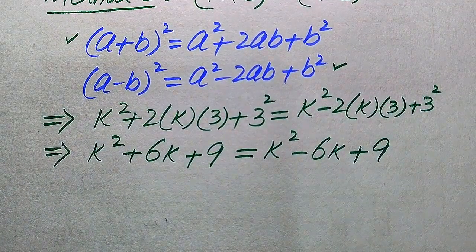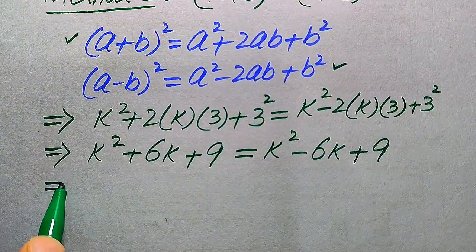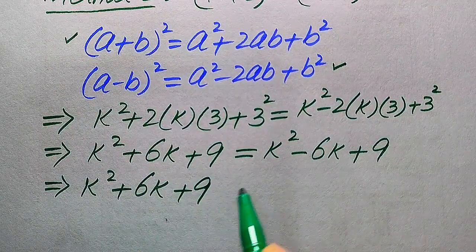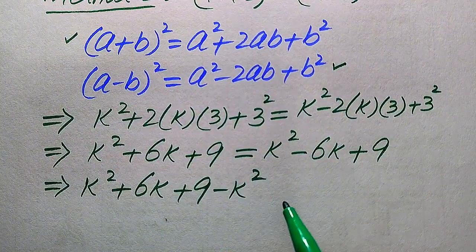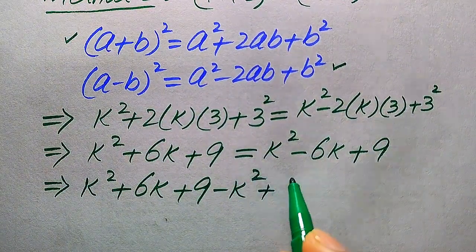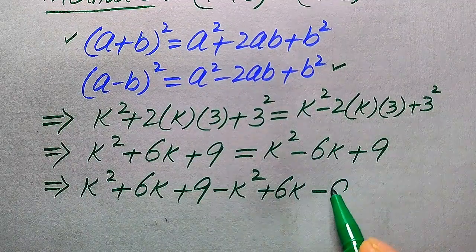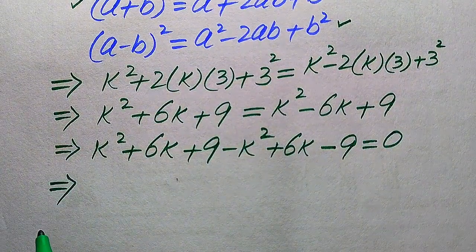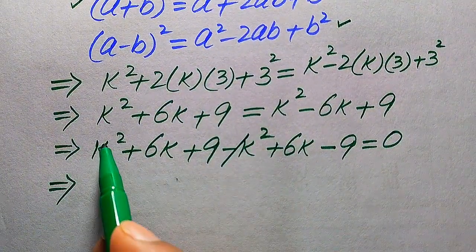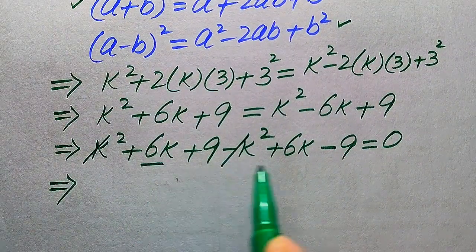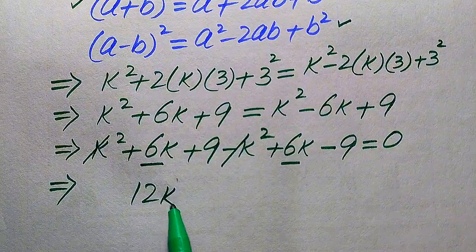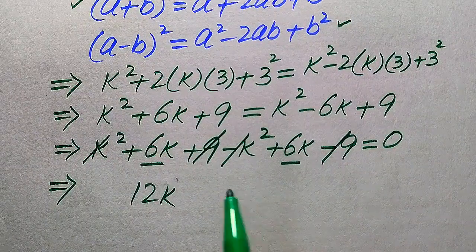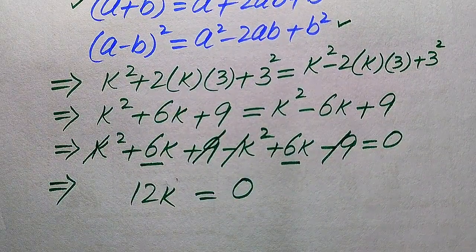We move all terms from the right hand side to the left hand side: k² plus 6k plus 9 minus k² plus 6k minus 9 equals 0. In the next step, the k² and minus k² cancel out, and plus 9 and minus 9 cancel out, giving us 12k equals 0.